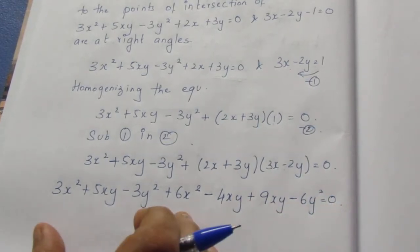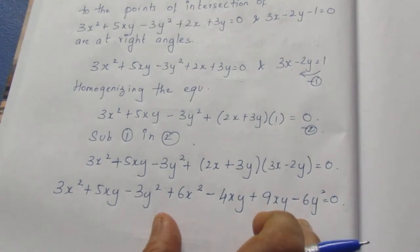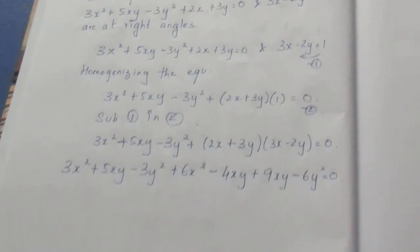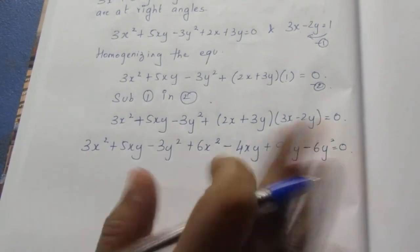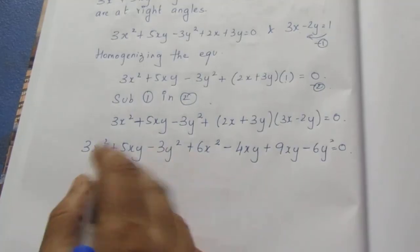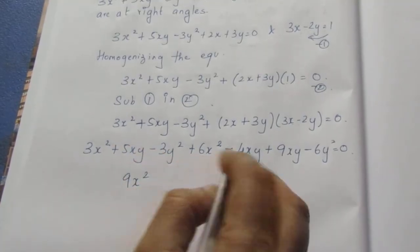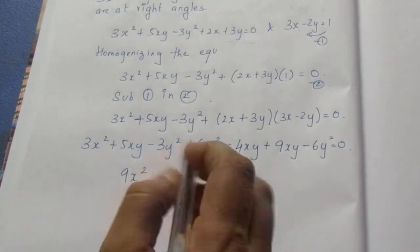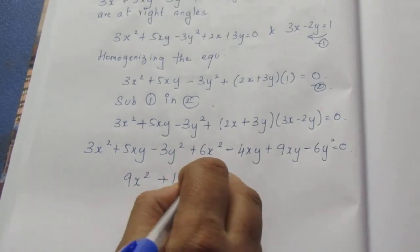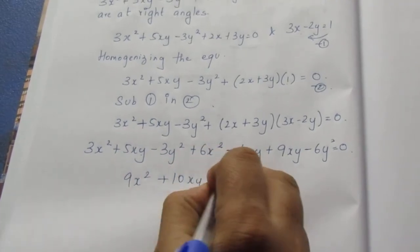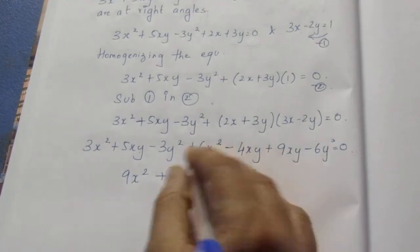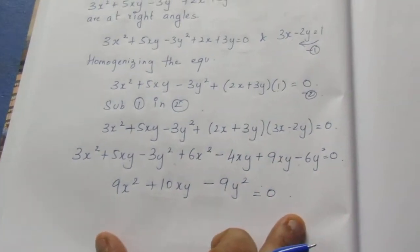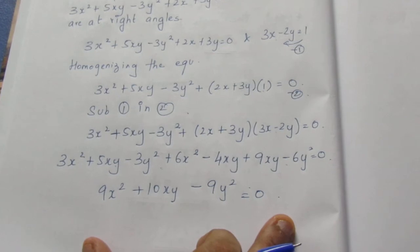Now we collect and combine the like terms. Adding the x² terms and y² terms together, we get 10x² − 9y² and the combined xy terms equal to zero.